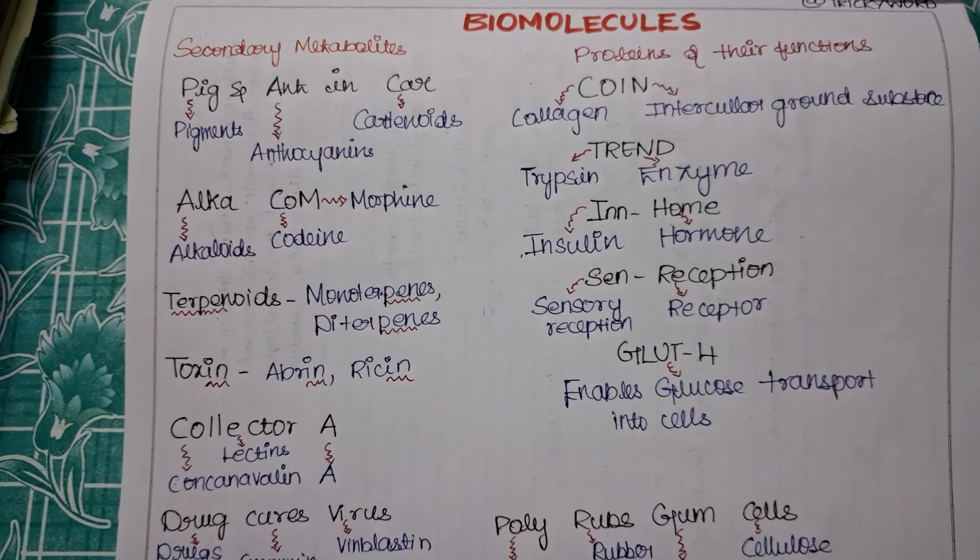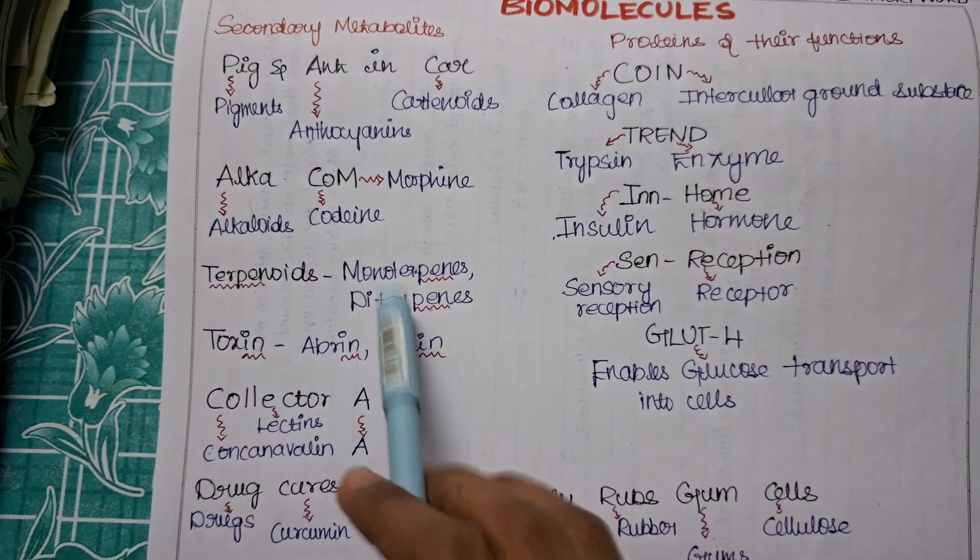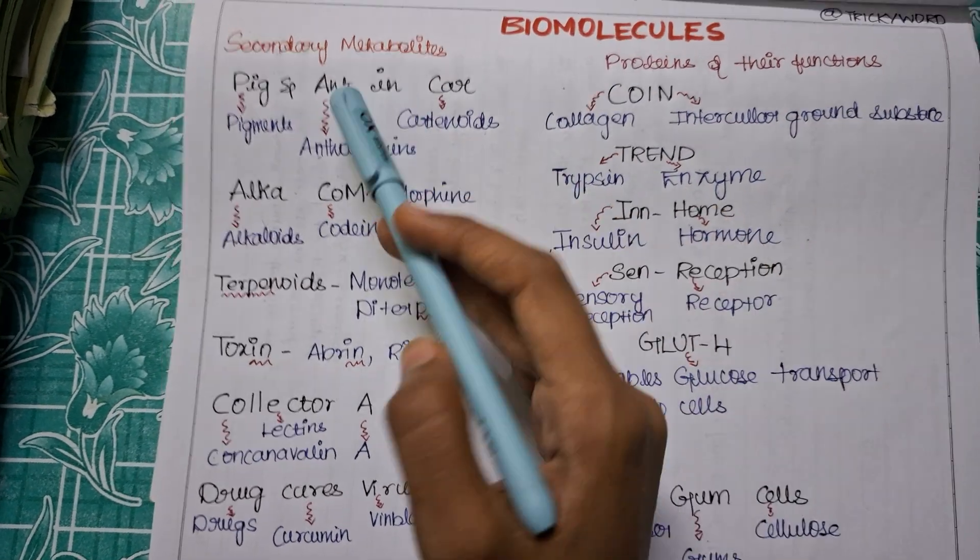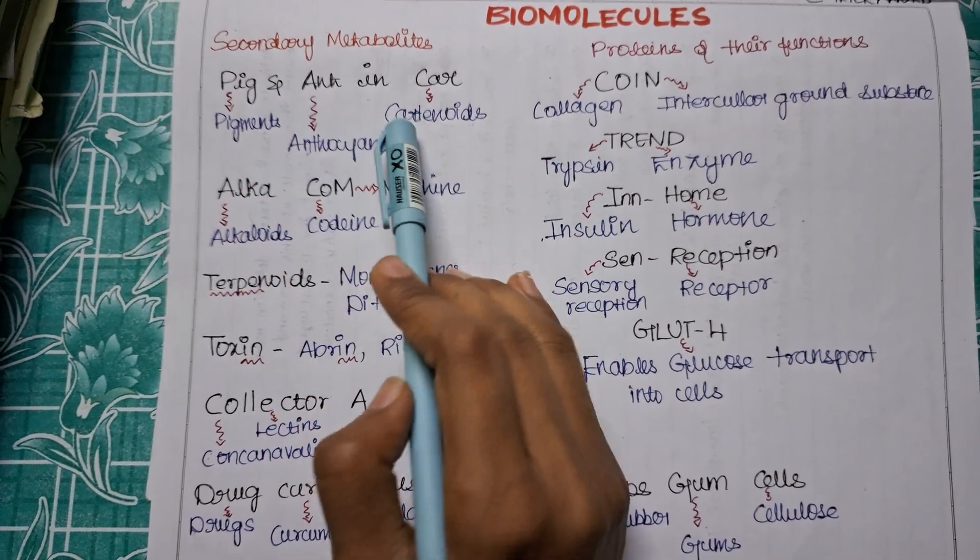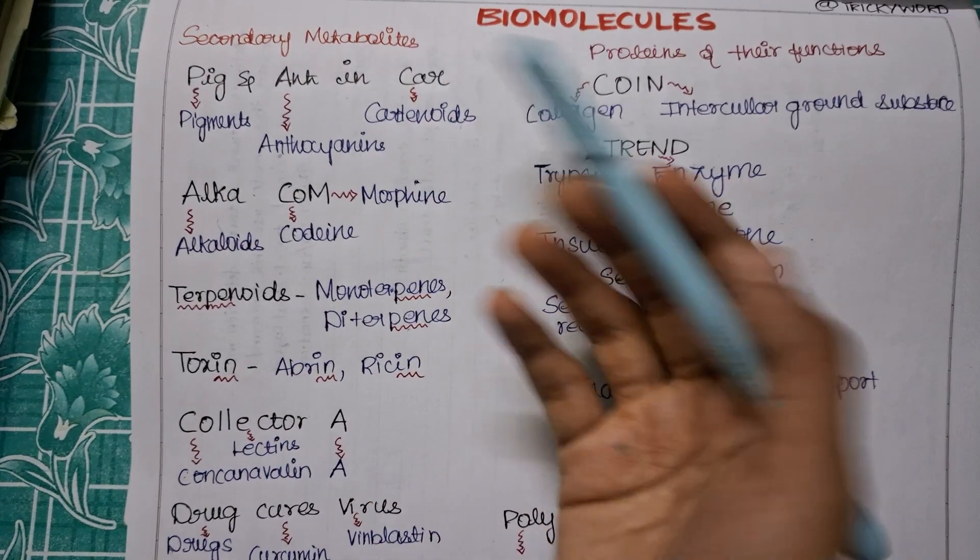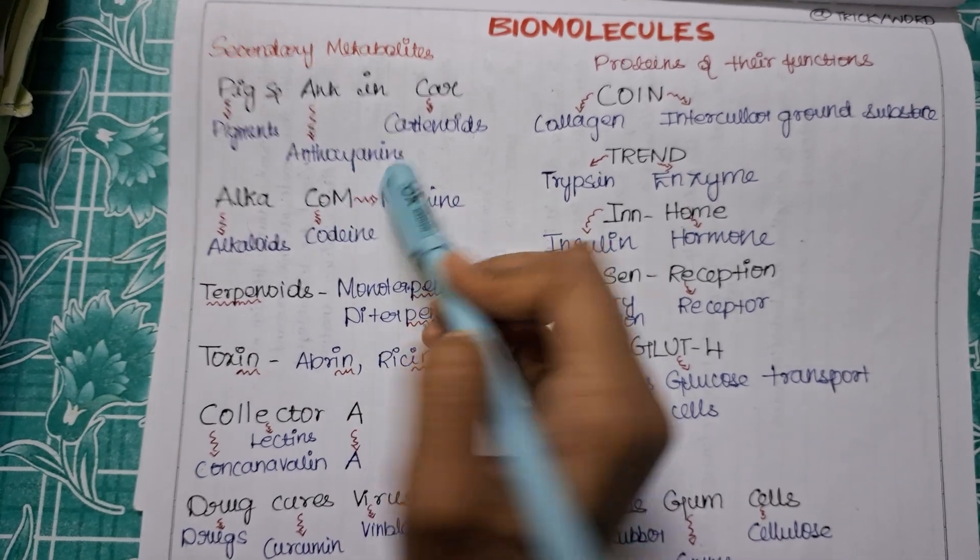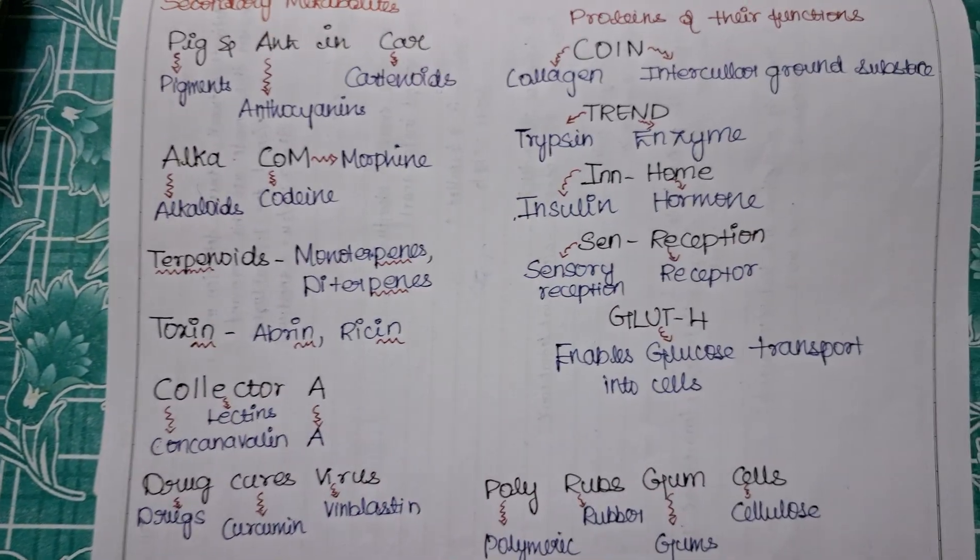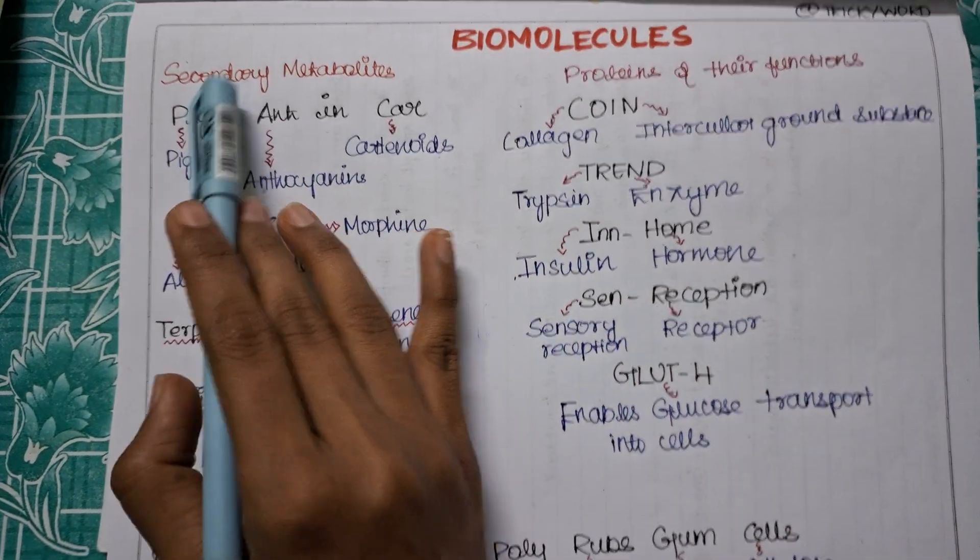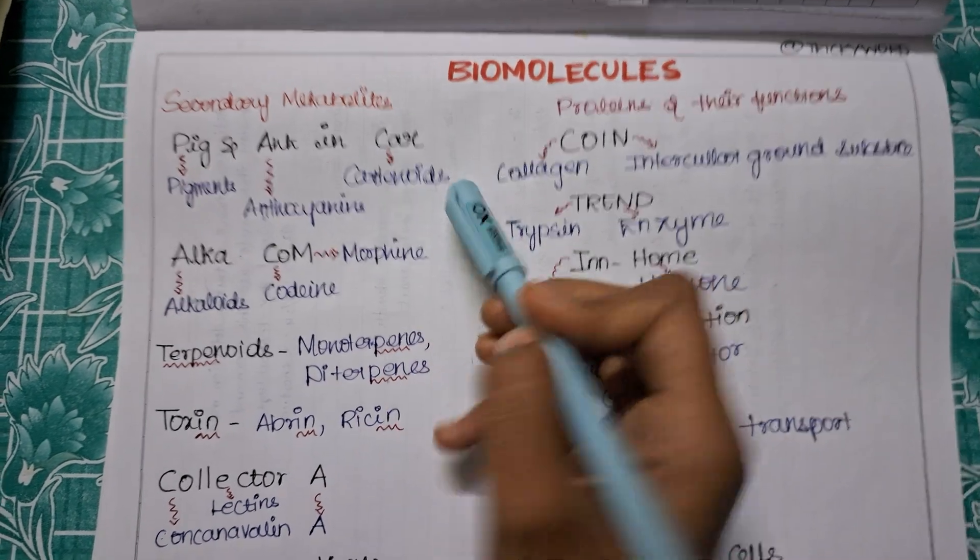So the next we will be dealing with the secondary metabolites. These are like really important from your MCQ in your NEET also, so listen to it carefully. So the first is PIG AND ANT IN CAR. Pig and ant is going in a car. So the trick is: PIG for pigments, ANT is for anthocyanins, CAR is for your carotenoids. So in secondary metabolites, the example for your pigments will be anthocyanins and carotenoids.